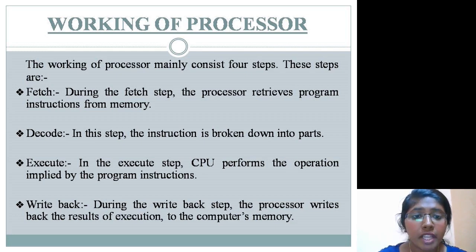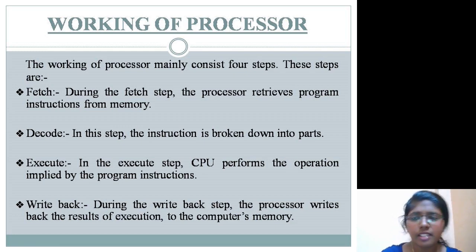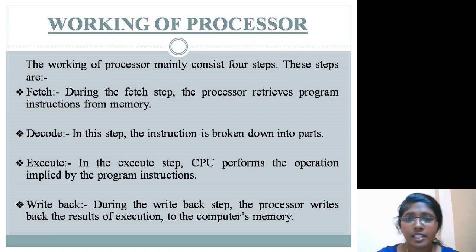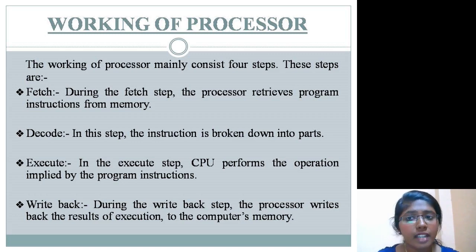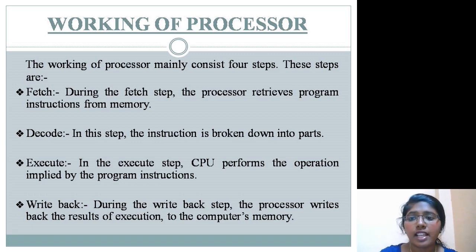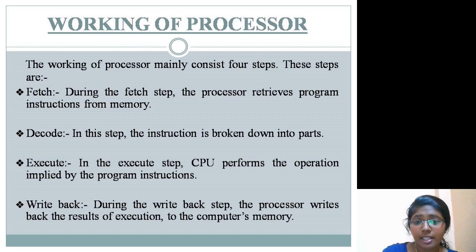In short, the working of a processor mainly consists of four steps. First, fetch: the processor retrieves program instructions from memory. Second, decode: the instruction is broken down into parts. Third, execute: the CPU performs the operation implied by the program instructions. Fourth, write-back: the processor writes back the results of execution to the computer's memory.